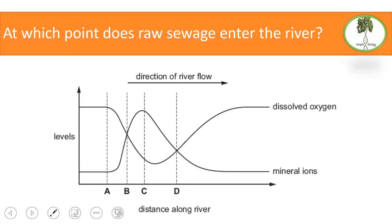At which point does raw sewage enter the river? We know that raw sewage causes eutrophication, and eutrophication results in a decrease in dissolved oxygen. Looking at the graph, mineral ions are increasing then decreasing, while at the same time dissolved oxygen is decreasing. The answer is point A — at this point mineral ions increase from the sewage, and dissolved oxygen starts decreasing due to the growth of algae.